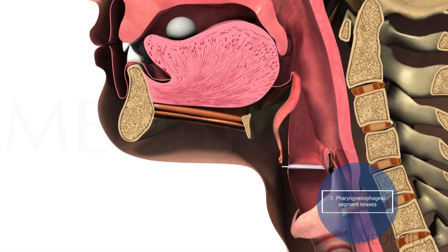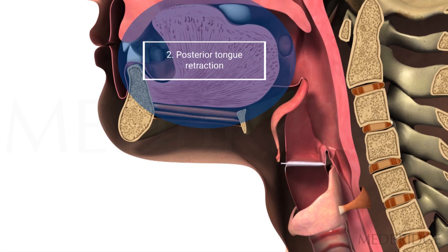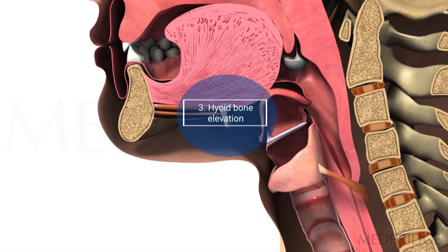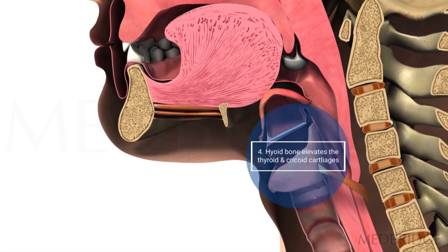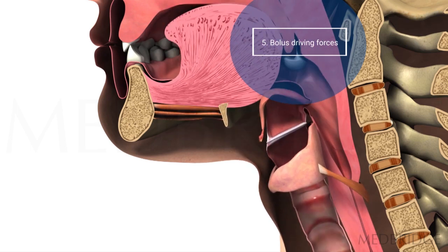The second thing needed to get the sphincter wide open is what I'll call mechanical traction. After the sphincter relaxes, the upper esophageal sphincter actually has to be pulled open. As shown in number two, the tongue propels the bolus from the oral cavity and, through its connections to the hyoid bone, elevates the hyoid — number three — which in turn elevates the entire laryngeal complex via its connections to the thyroid and cricoid cartilage, extending the opening of the UES.